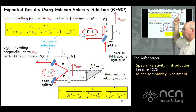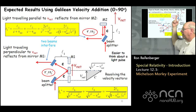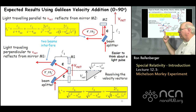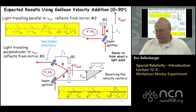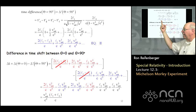I call this equation 1 and write it in red. Now I rotate the entire apparatus through 90 degrees and calculate what the time difference is between the light beam parallel to the net drift velocity and the light beam perpendicular to it. After rotating, the mirrors are interchanged — what was M1 becomes M2, and the path lengths L1 and L2 swap roles. The algebra is exactly the same, giving equation 2, written in blue.